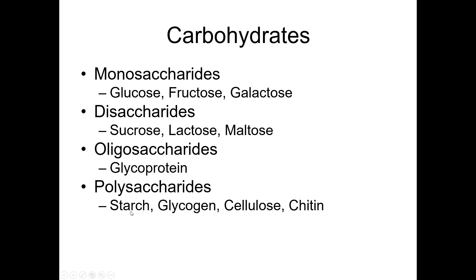Starch is what plants use to store carbohydrates for energy. Glycogen is what animals and fungi use to store carbohydrates for energy. Cellulose is what plants use for structure — not energy. Chitin is used by animals and fungi as a structural carbohydrate, also not for energy. I'll describe the species type and function, and you need to identify which polysaccharide it is.